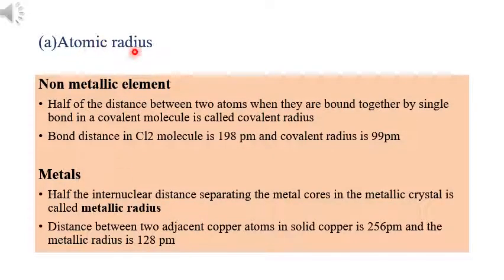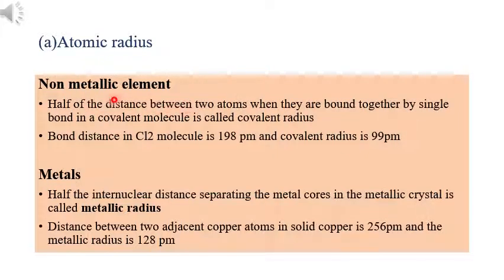In this section, atomic radius can be classified into two types. The first one is covalent radius, related to non-metallic elements, and the second one is metallic radius, related to metals. The covalent radius is defined as half of the distance between two atoms when they are bound together by a single covalent bond in a covalent molecule.